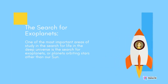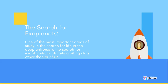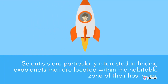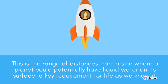One of the most important areas of study in the search for life in the deep universe is the search for exoplanets, or planets orbiting stars other than our Sun. Thousands of exoplanets have now been discovered, and scientists are particularly interested in finding those located within the habitable zone of their host stars — the range of distances where a planet could potentially have liquid water on its surface, a key requirement for life as we know it.